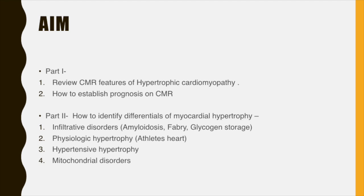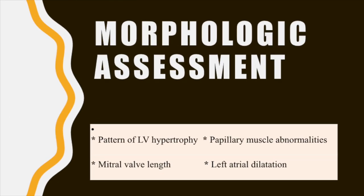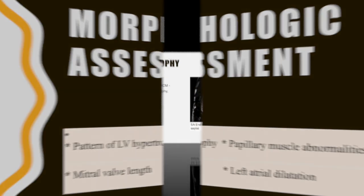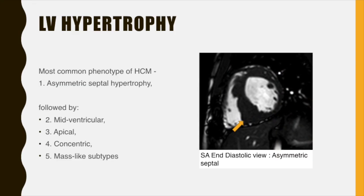In this part 1 tutorial, I am going to review how cardiac MR is useful to understand various features of HCM and also review various prognostic factors of HCM that can be established on cardiac MR. The second part of the tutorial will focus on identifying differentials of myocardial hypertrophy such as infiltrative disorders, physiologic hypertrophy, hypertensive hypertrophy, and mitochondrial disorders. First and foremost is morphological assessment of the cardiac pattern of LV hypertrophy, papillary muscle abnormalities, mitral valve abnormalities, and left atrial dilatation.